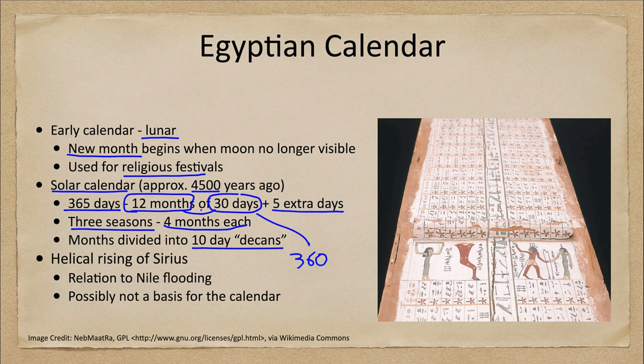This made the system much more uniform in many ways than what we use today: 10 days in a week, three weeks in a month, 12 months in a year — with only the five extra festival days at the end needed to account for the full 365-day calendar.